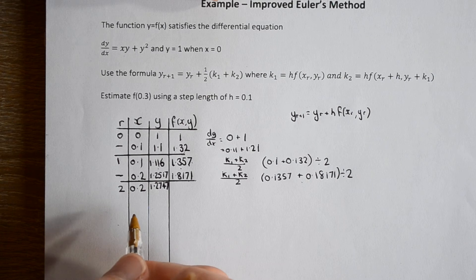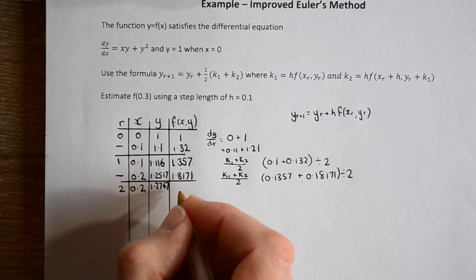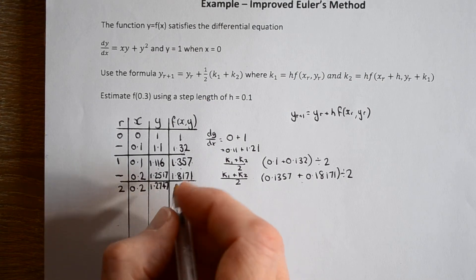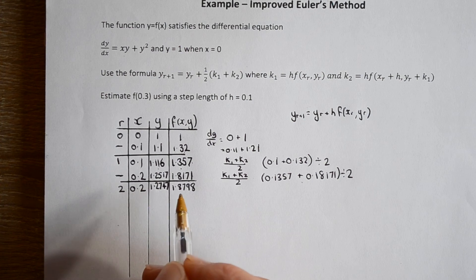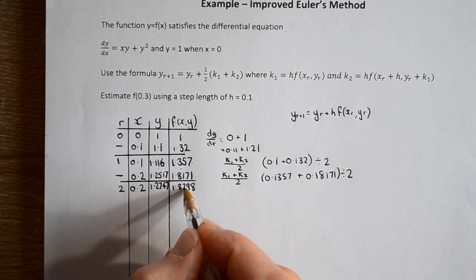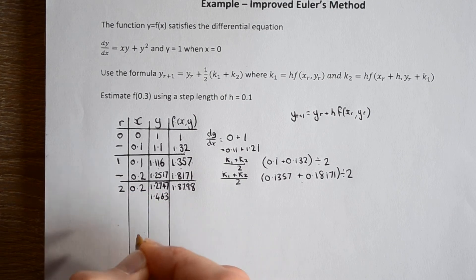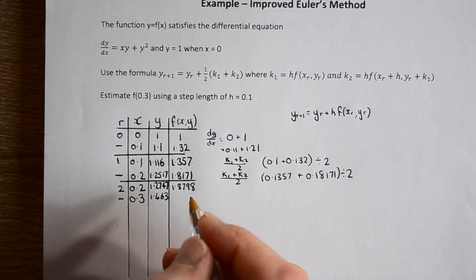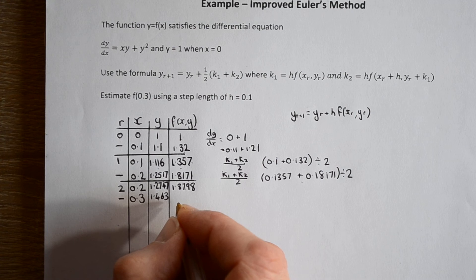We now consider this point as the start of the third step. We find our gradient first: x times y plus y squared gives us a value of 1.8798. We use Euler's method to find the y value at the end of this step: 1.247274 plus 0.1 times that gradient, which gives us a value of approximately 1.463. This is our false point at x equals 0.3. We now find the gradient at the end: x times y plus y squared gives 2.578.